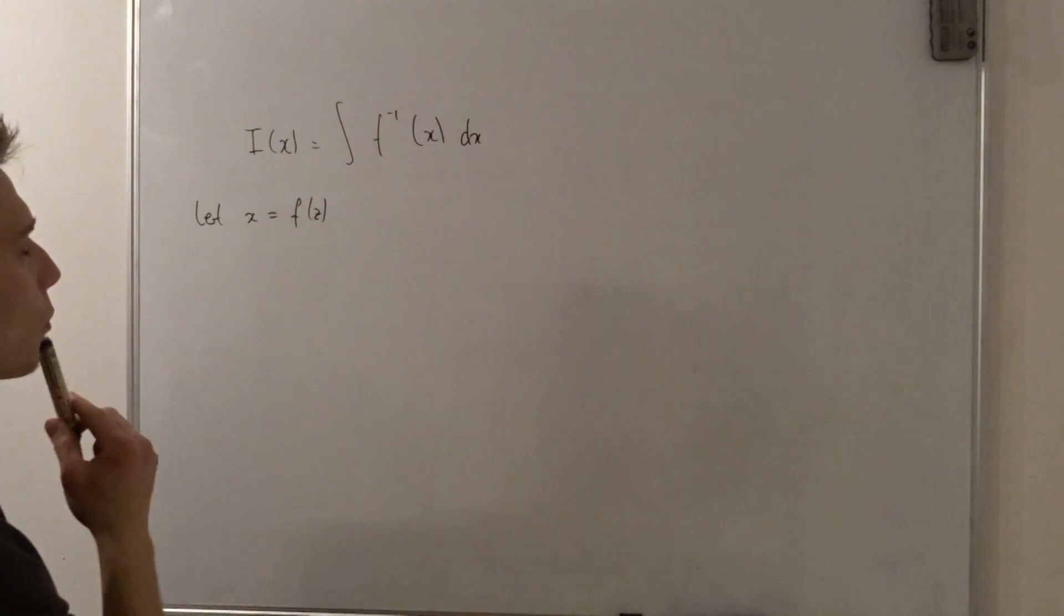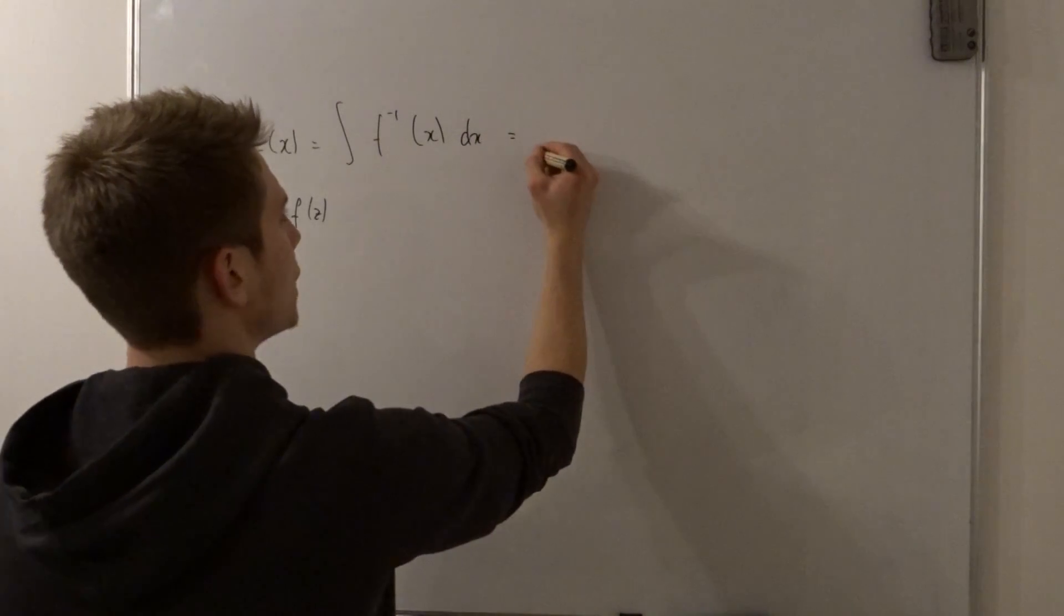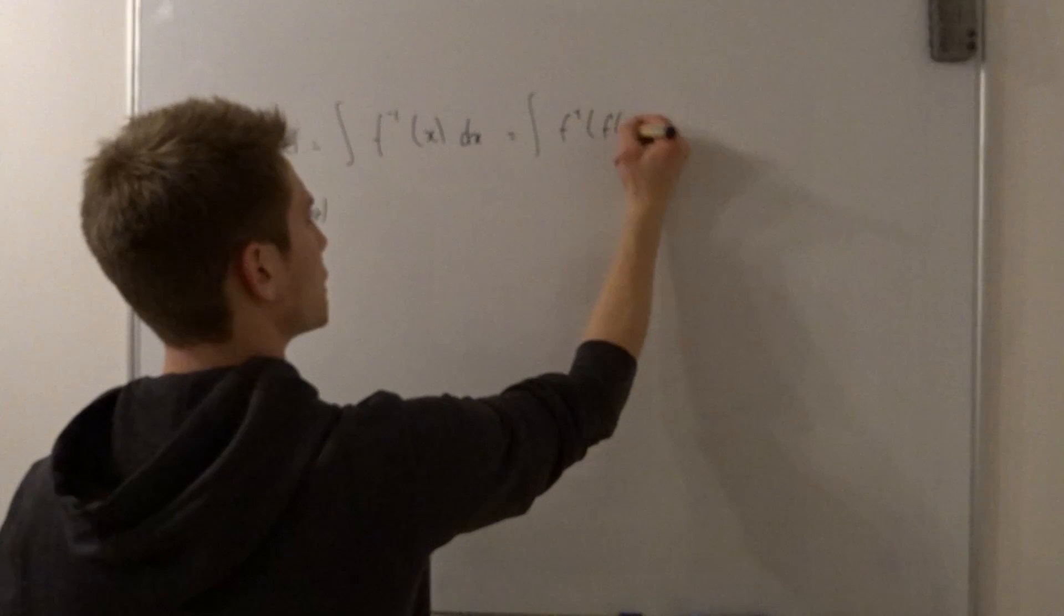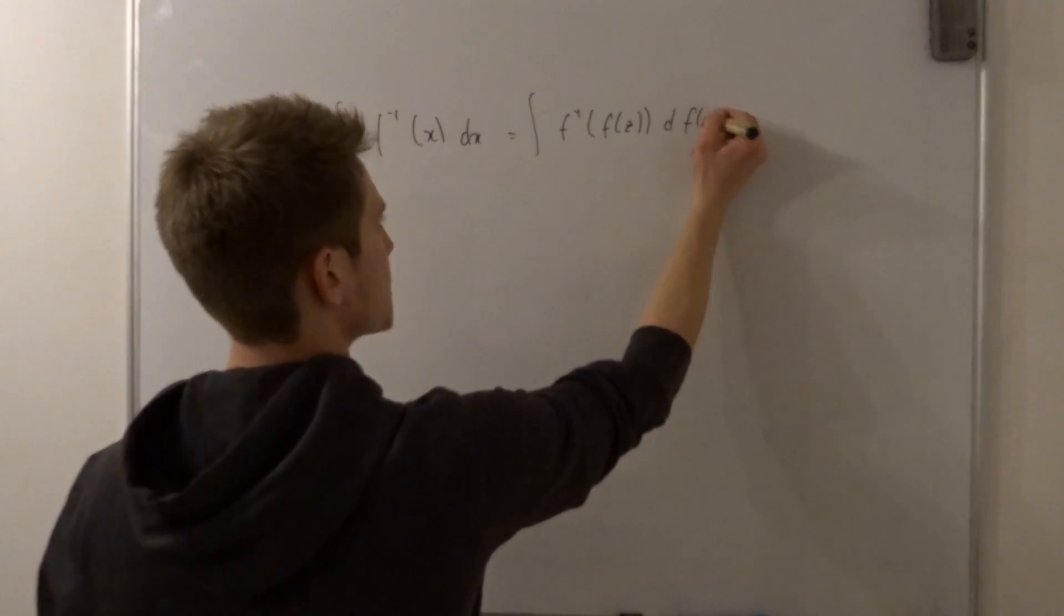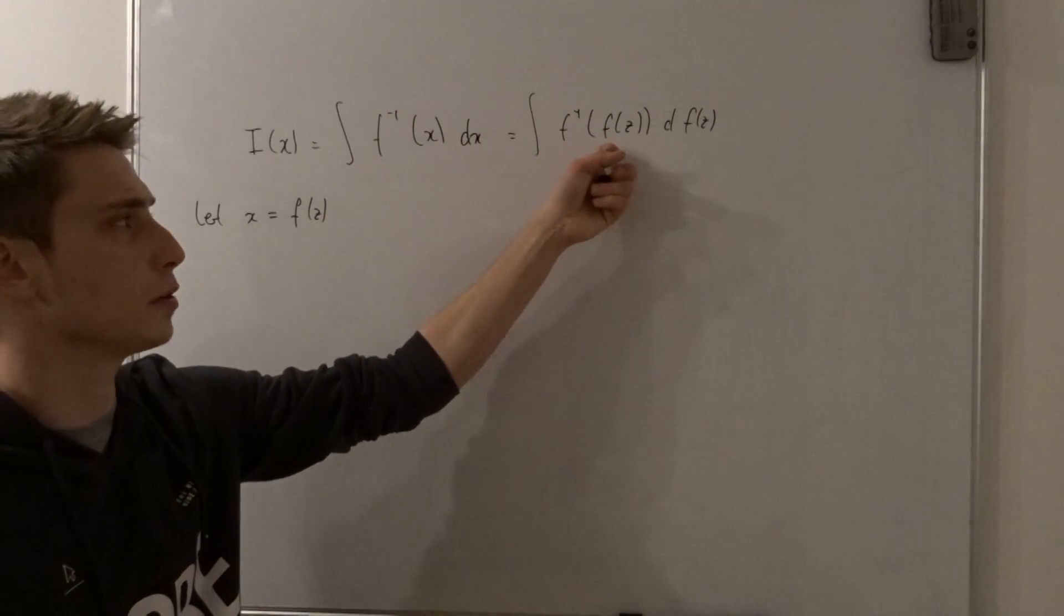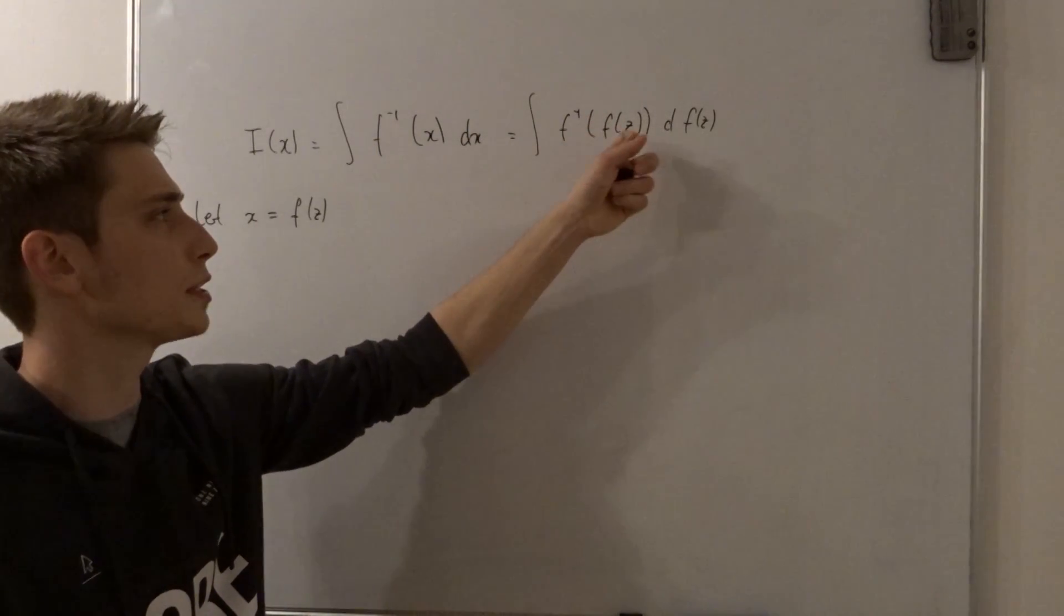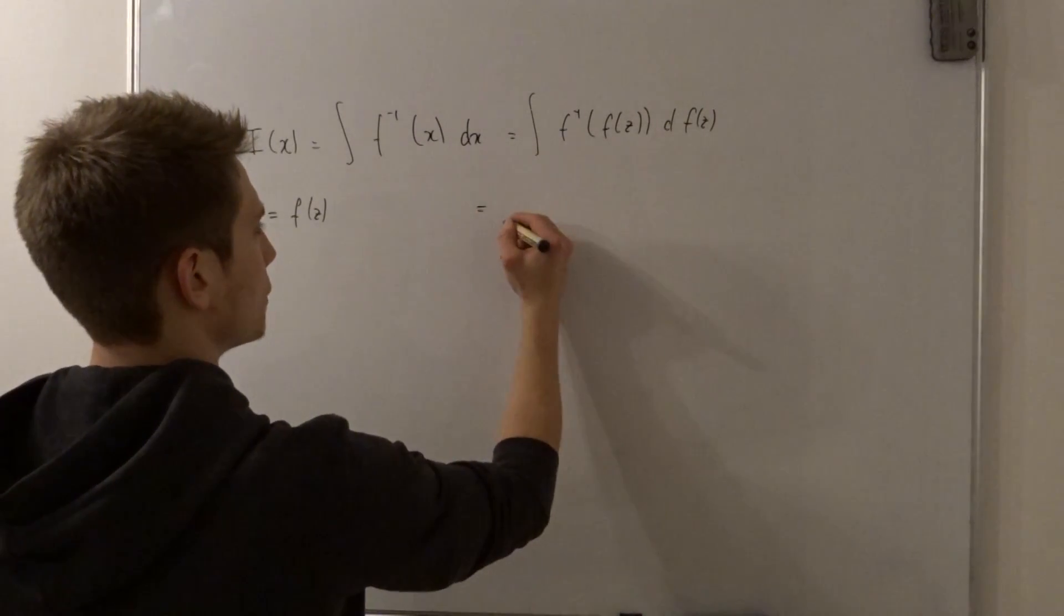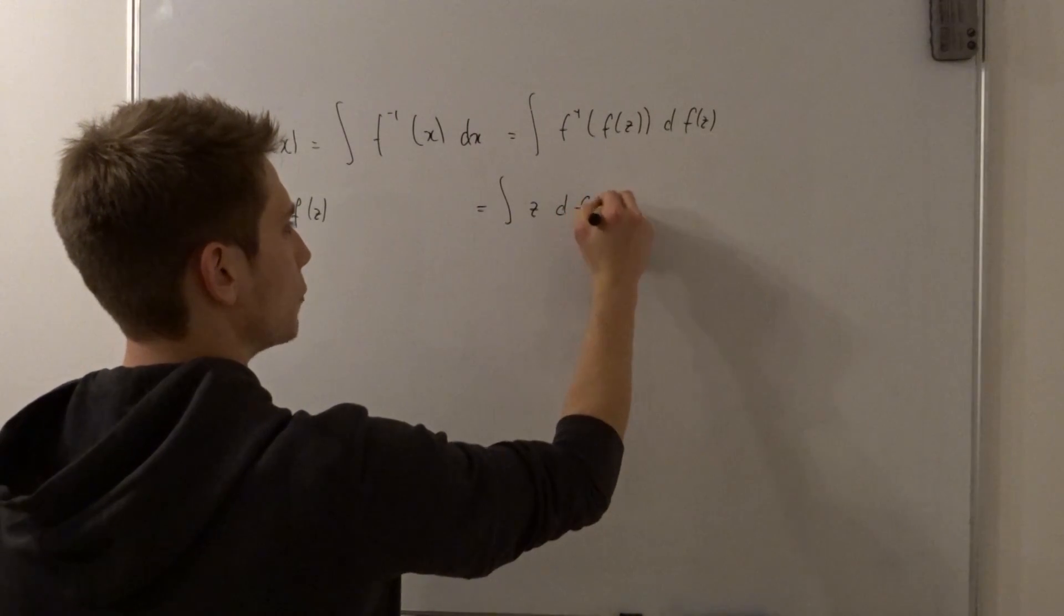Okay, now we can plug all of these x's in. So what we end up with is the integral of the inverse function of the function of z times df(z). One thing you might notice, we are using an inverse function on a function, so those two cancel out and what we are left with is the argument. So we end up with the integral of z times df(z).